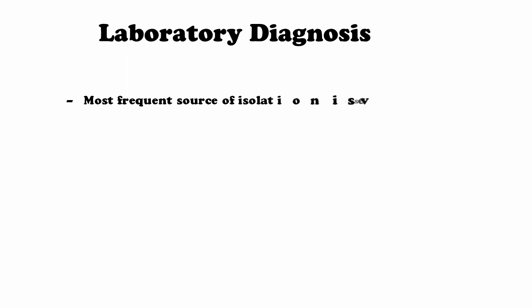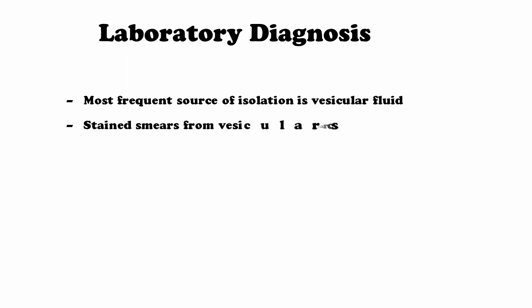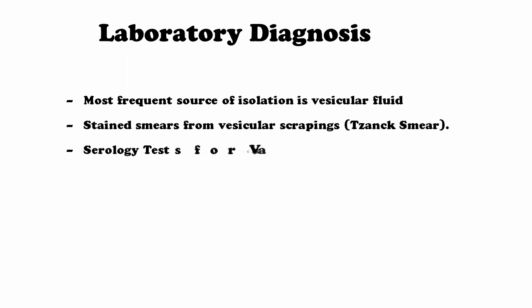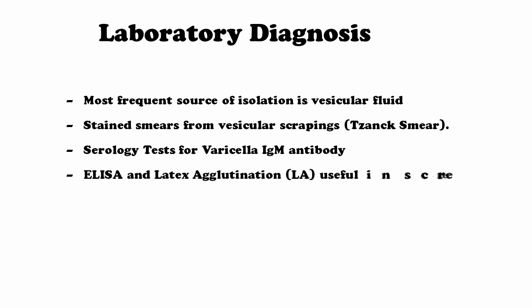For laboratory diagnosis there are several diagnostic processes. You can isolate vesicular fluids, perform stain smears and vesicular scrapings, serology tests for varicella IgM antibodies, ELISA, and latex agglutination — which is used when screening for varicella immunity. These tests will give you proper confirmed information about the disease.